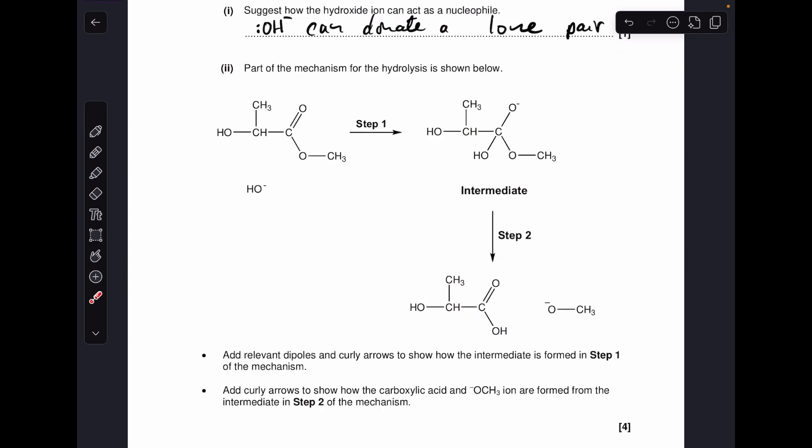Moving on to part two, so the first bullet point, add relevant dipoles and curly arrows to show how the intermediate is formed in step one. So the first thing I've done is put the dipole across this CO double bond. There'll also be a dipole here, but that's not part of the mechanism. So I'm just showing the relevant dipole.